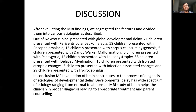After evaluating MRI findings, they were segregated into various etiologies. Out of 62 children who presented clinically, 21 had periventricular leukomalacia, 18 had encephalomalacia, 15 had corpus callosum dysgenesis, 5 had Dandy-Walker malformation, 5 had pachygyria, 12 had leukodystrophy, 33 had delayed myelination, 15 had isolated atrophic changes, 3 had infection-associated changes, and 29 had hydrocephalus.